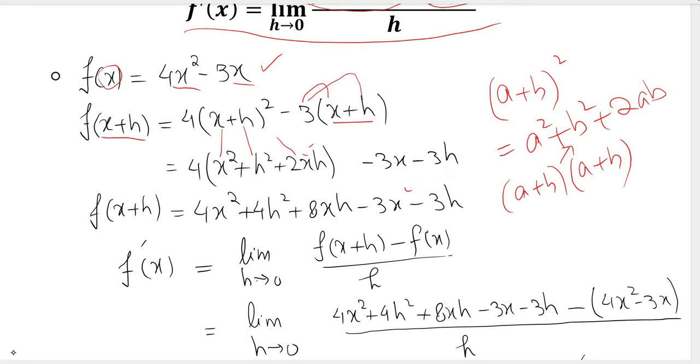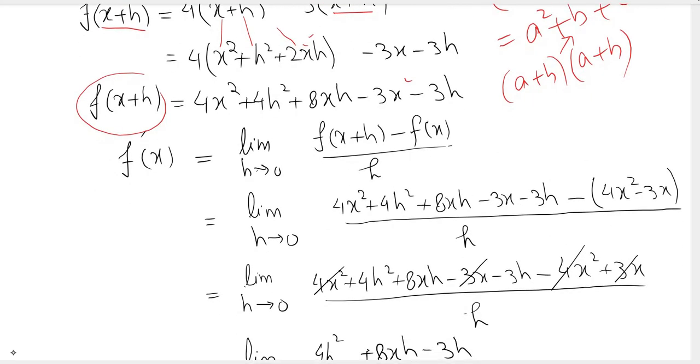Now we have f(x + h), and we are already given f(x), so we substitute that into the formula: limit as h approaches 0 of f(x + h) minus f(x) over h.